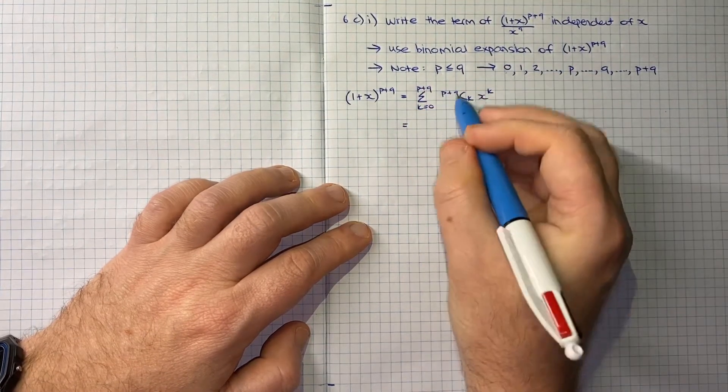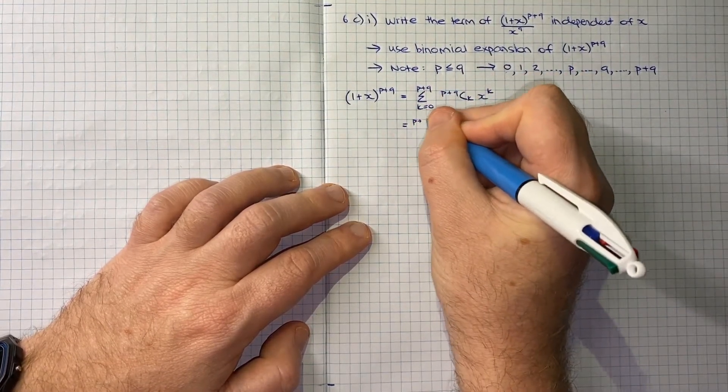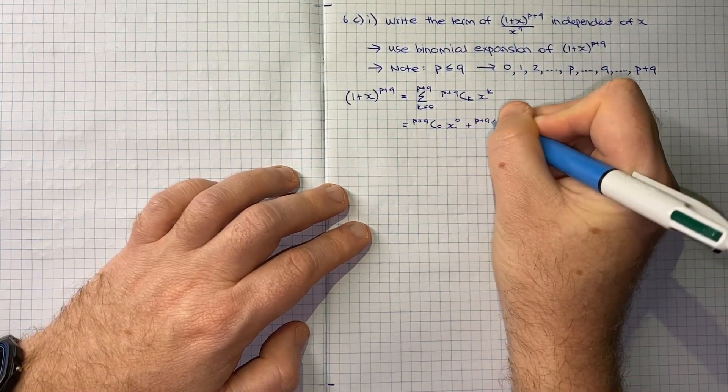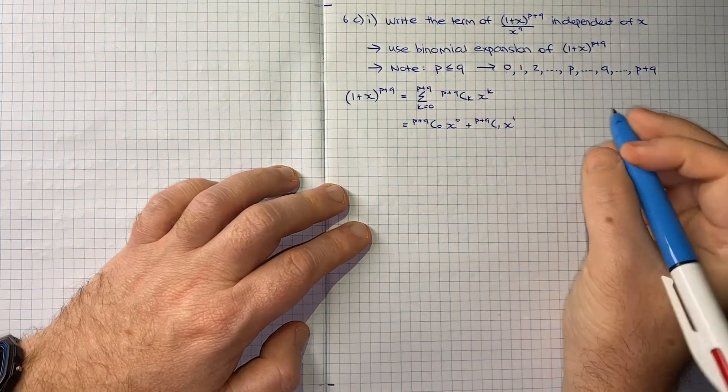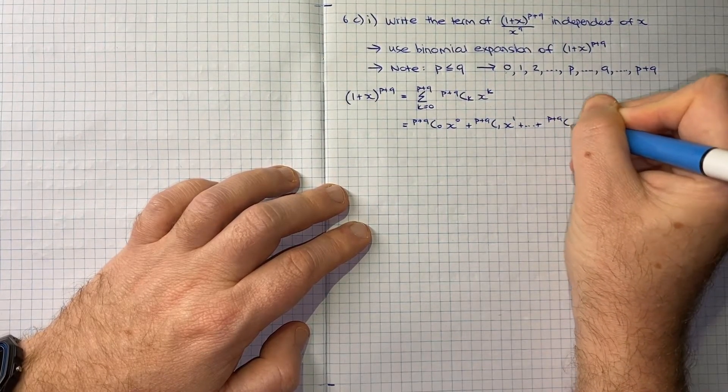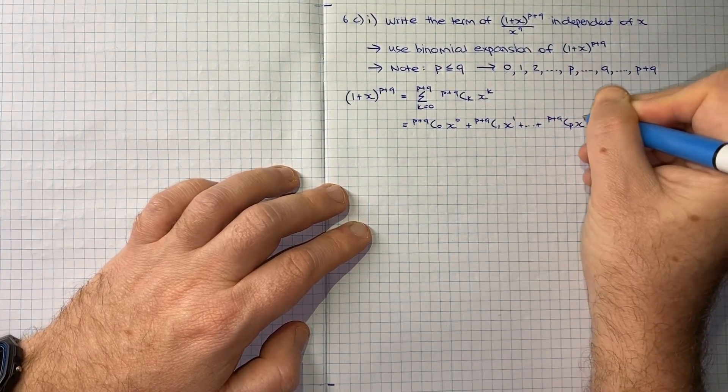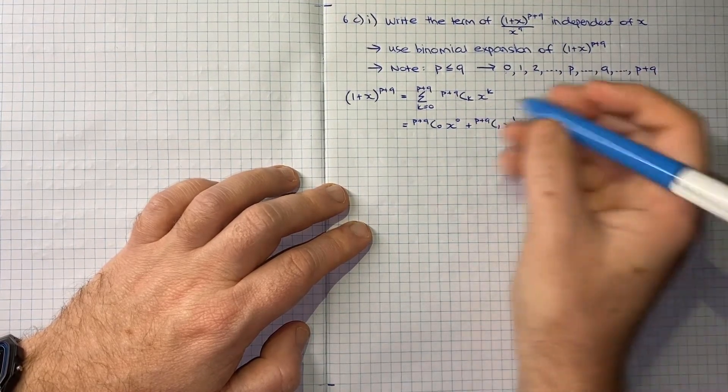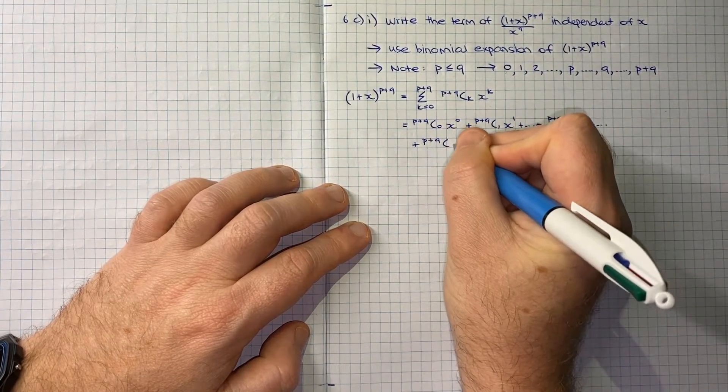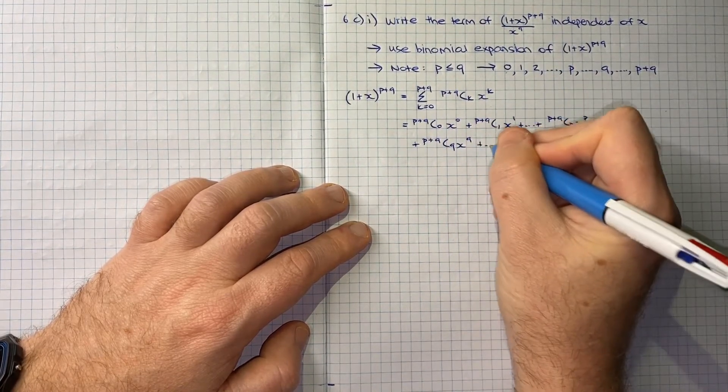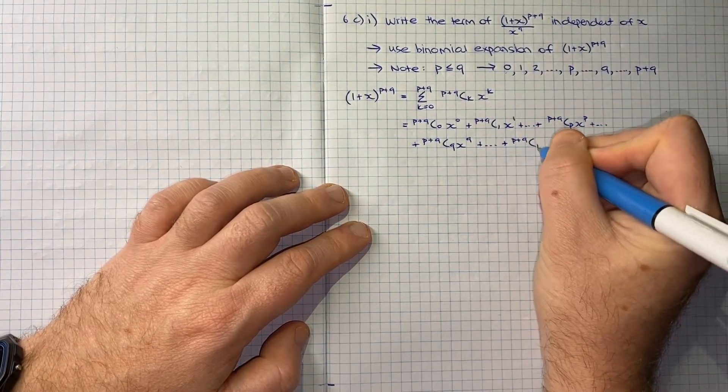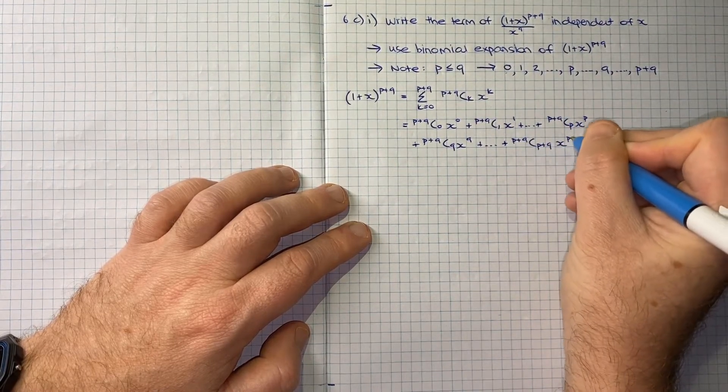We can write this as (p+q choose 0) x^0 plus (p+q choose 1) x^1 and so on. Then we get up to (p+q choose p) x^p, and then we keep going and we'll get (p+q choose q) x^q, and then we'll keep going and finally we'll have (p+q choose p+q) x^(p+q). So that's our initial step of doing our binomial expansion of this numerator.